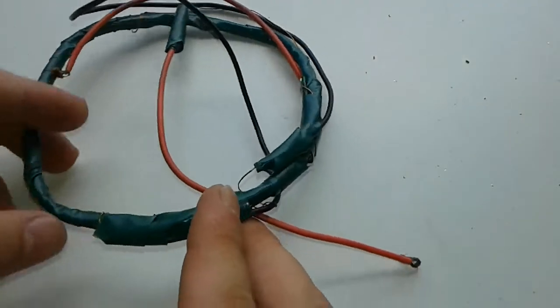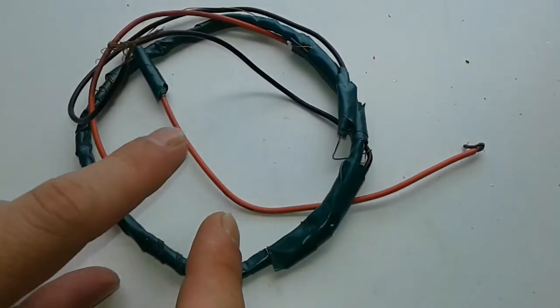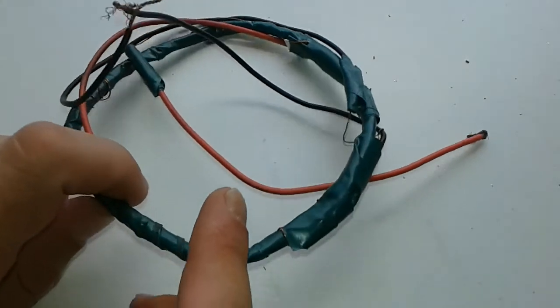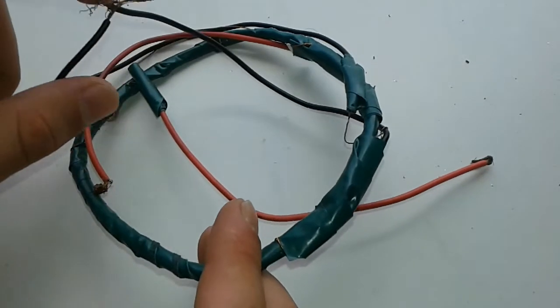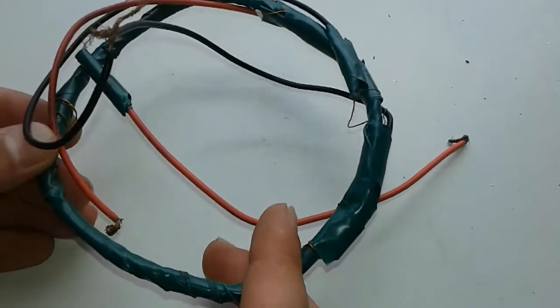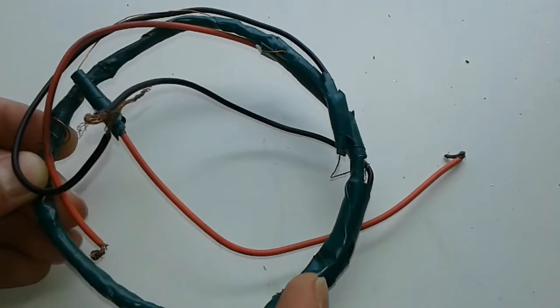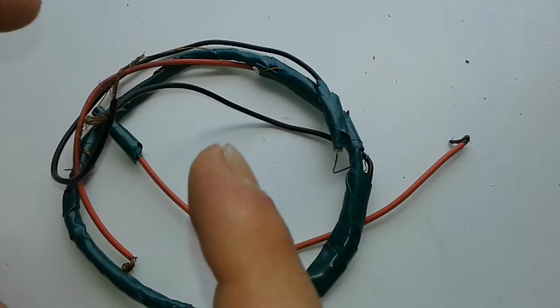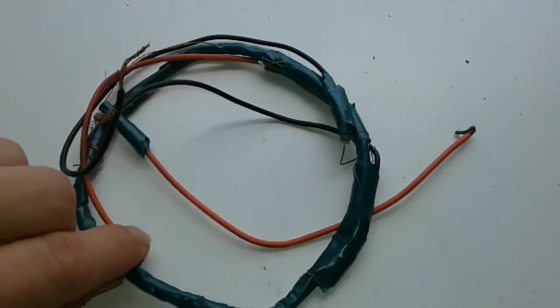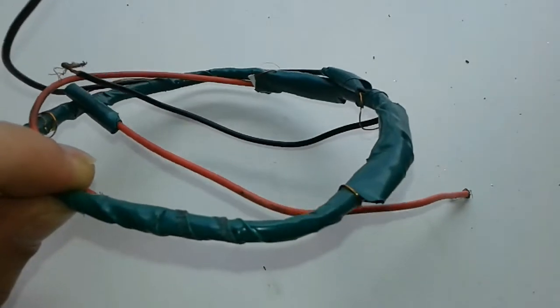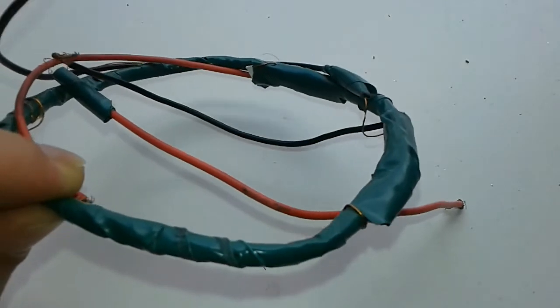Another type of transformer is this air core transformer that I used in other videos to create some Joule Thief inverters. Basically this one doesn't have an iron core, it's just wire wrapped around in air - basically two coils wrapped around each other but with different turns and different gauges as well.